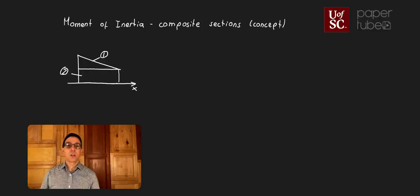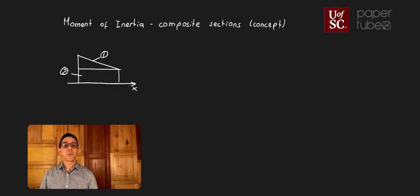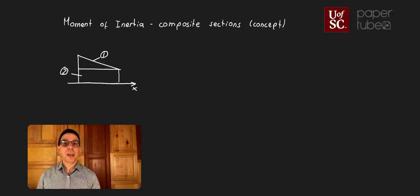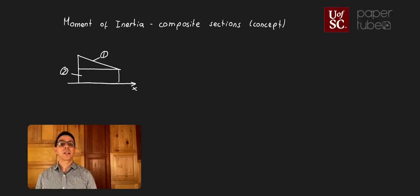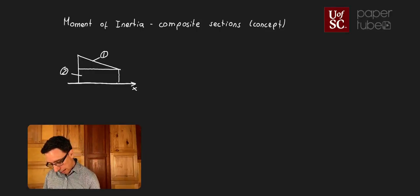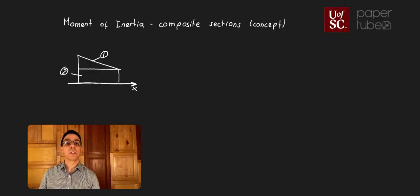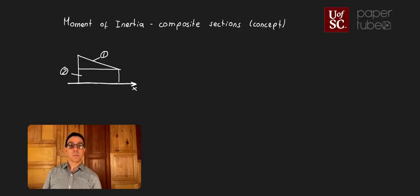To find the total moment of inertia, we need to add the moment of inertia of the first section and the second section. But before we can do that, we have to apply the parallel axis theorem to calculate the moment of inertia with respect to a common axis. We cannot simply add the moments of inertia about the centroid of each shape — they have to be about a common axis.